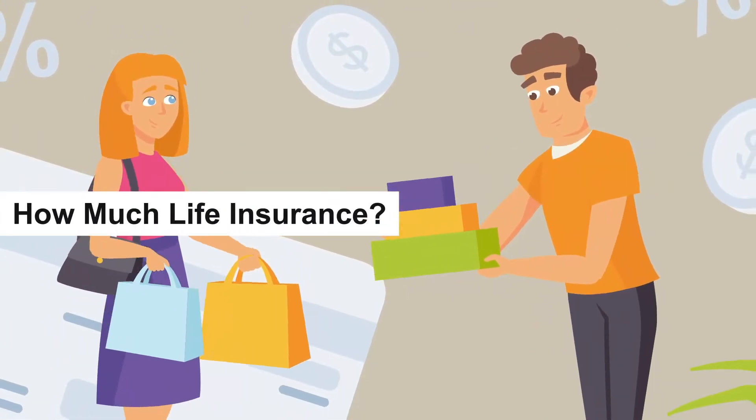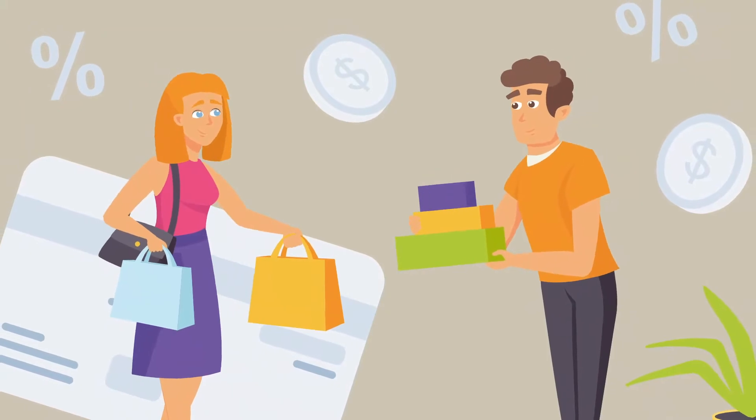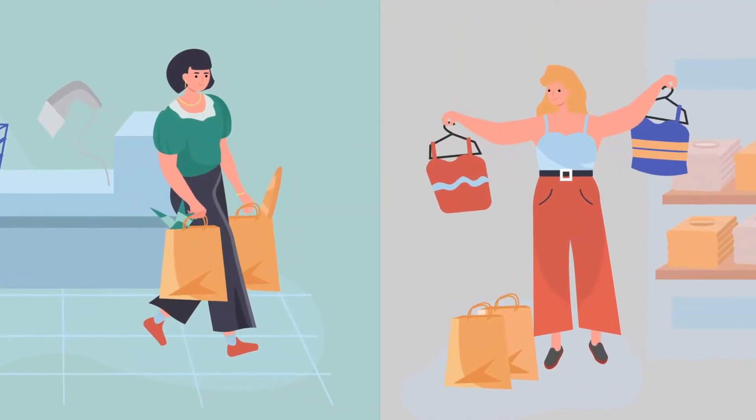When you start thinking about purchasing life insurance, the first thing you want to consider is how much money is needed by your family. The face value of the life insurance, otherwise known as the death benefit, is chosen accordingly.